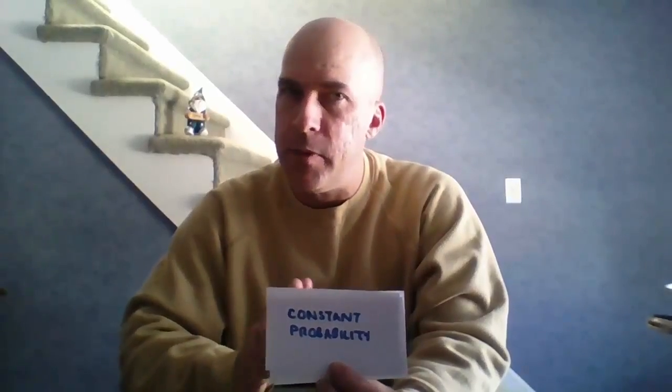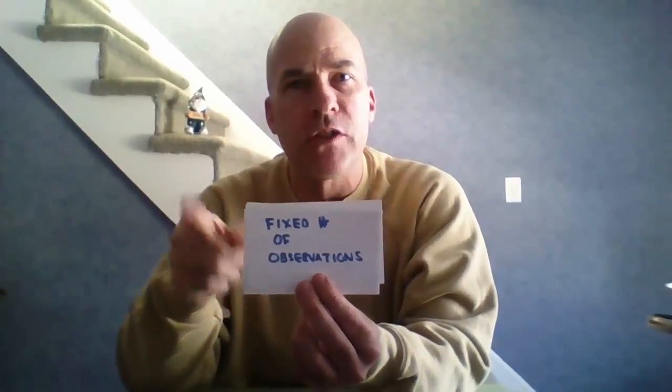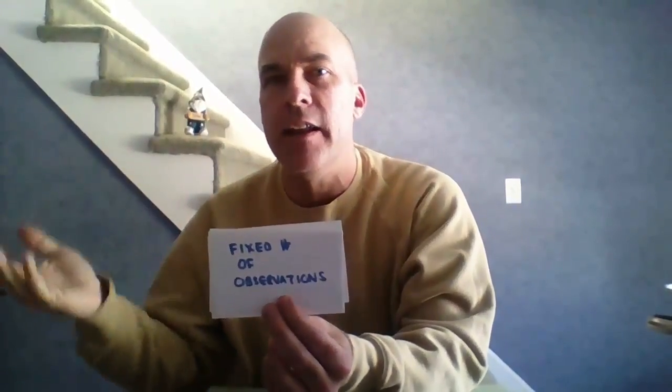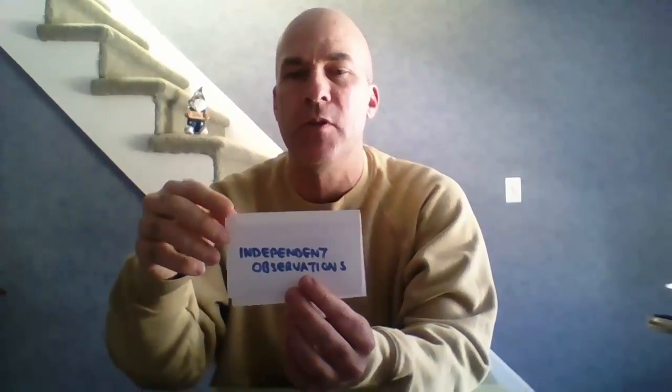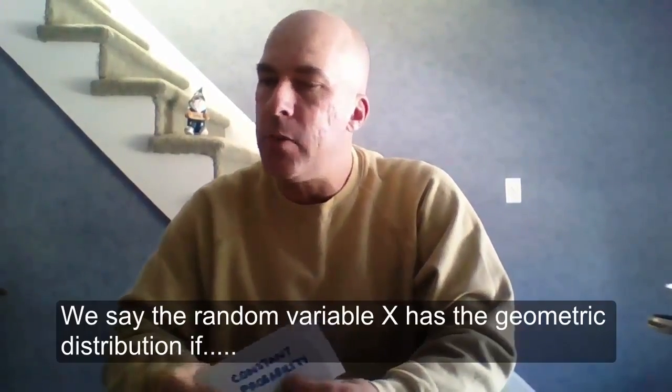Now, which of those are the same in geometric probability and which are different? Did I have success and failure? Yes — male fish and female fish, so that one stays. Do I have a fixed number of observations? That's what's different here — the first time it took two trials, the second time nine trials, so the number of observations is not fixed. Do I have independent observations? Yes, every time I reach in I have a 30% chance of success. And do I have a constant probability? Yes, 30% and 70%.